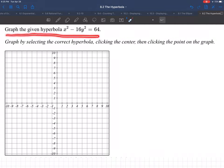Graph the given hyperbola, x squared minus 16y squared equals 64. Okay, so let's take a look. What do we have to do?